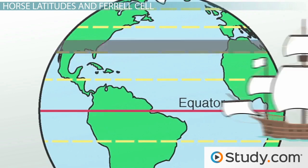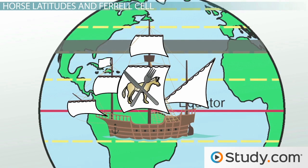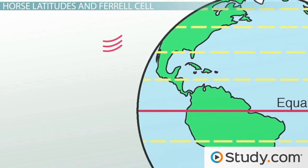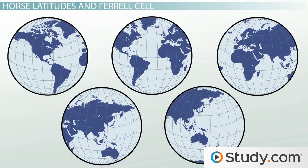The horse latitudes were named this because, like the doldrums, there is little wind to push ships along the ocean. Legend has it that when this happened, horses on board the ship were either eaten as food supplies went low or thrown overboard to reduce the load. The horse latitudes create areas of hot, dry surface air around Earth, which is where we find the world's great deserts like the Sahara in Africa, the Mojave in the U.S., and the Great Victoria in Australia.